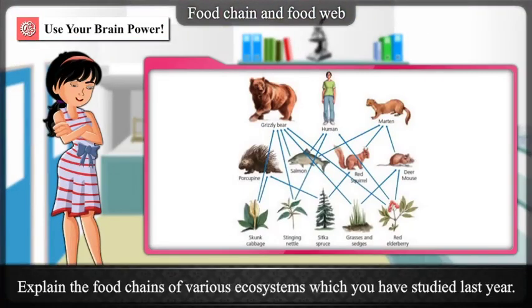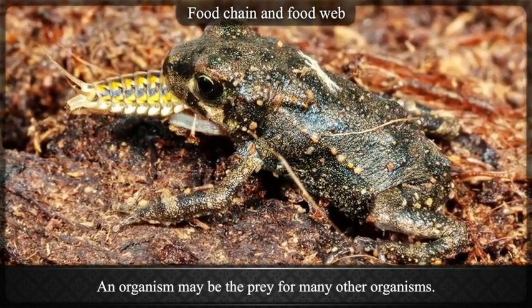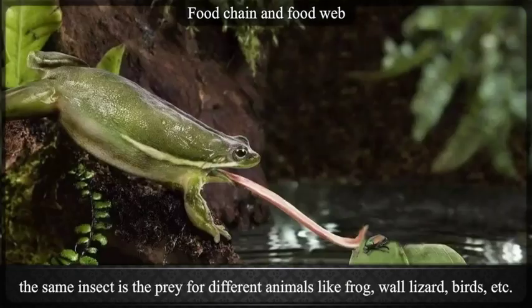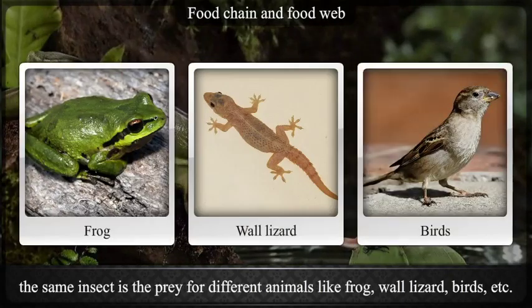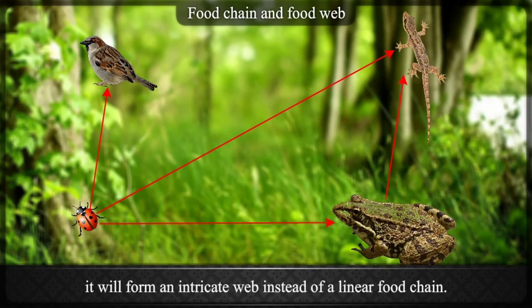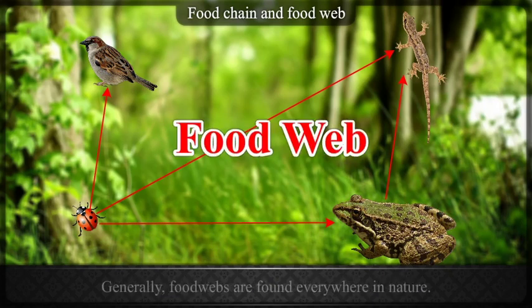An organism may be the prey for many other organisms. For example, an insect feeds upon leaves of various plants, but the same insect is the prey for different animals like frog, wall lizard, birds, etc. If this is to be shown in a figure, it will form an intricate web instead of a linear food chain. Such an intricate network is called a food web. Generally, food webs are found everywhere in nature.